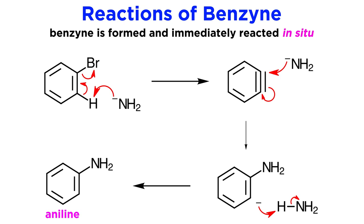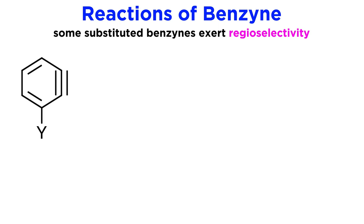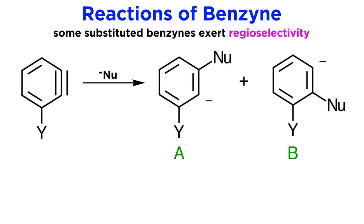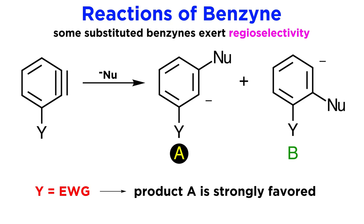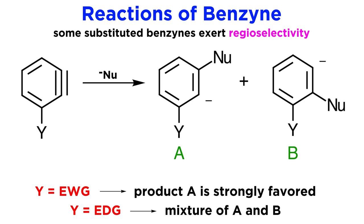Now to get a little more interesting, let's examine substituted benzynes. In such a case, we will have two possible regioisomeric products. Let's say that the substituent is adjacent to the triple bond. If the substituent is electron withdrawing, the meta product will be strongly favored, because the intermediate negative charge is better stabilized by the electron withdrawing group if it is adjacent. But if the substituent is electron donating, there is no strongly directing effect, and we get a mixture of regioisomers.